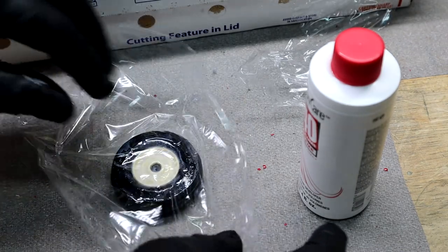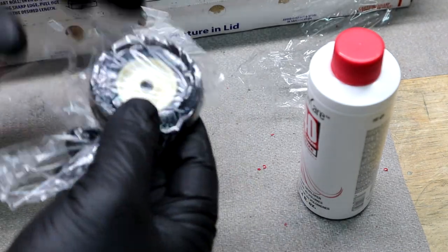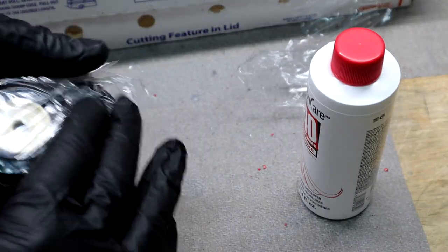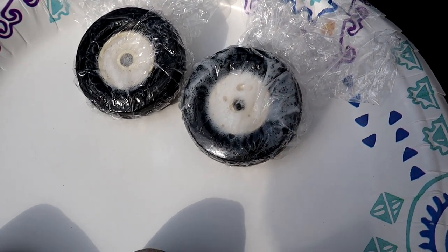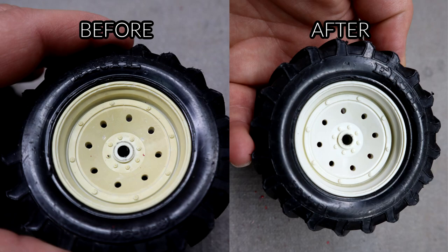And you smear it all over the part that you want to Retrobrite. Cover it in some plastic. You can submerge this in water, but these parts are small, so we'll just cover it in some plastic wrap. Set it in the sun for, this took about 8 hours in the sun. And I think the results speak for themselves. It really shined them up, made them look brand new.